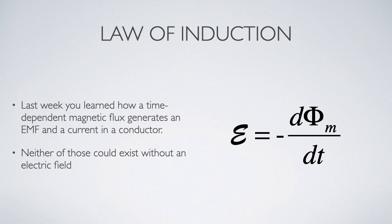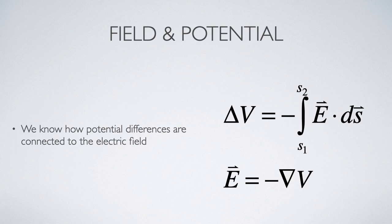Neither of them could be in that conductor without an electric field also being present. Previously we studied the connection between potential differences and electric fields, so we can find the potential difference by integrating the electric field, or we can find the electric field by differentiating the potential function.